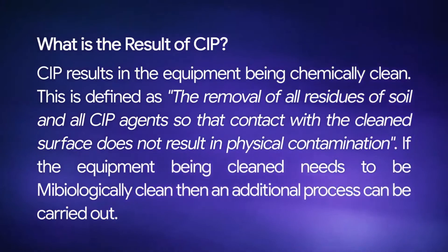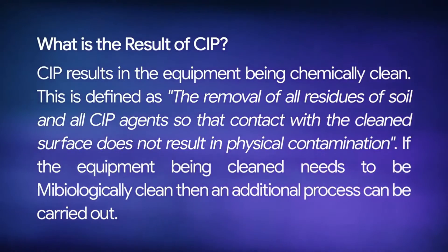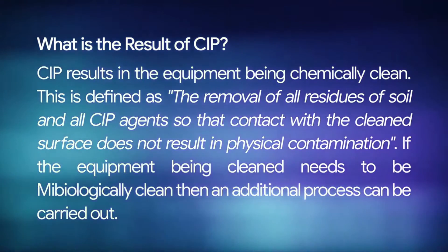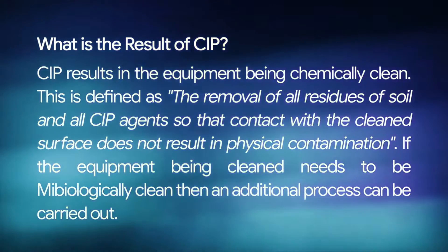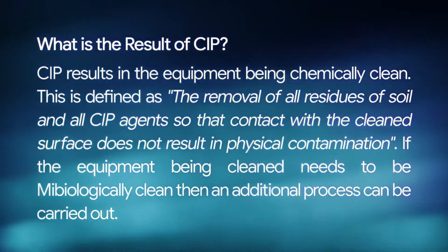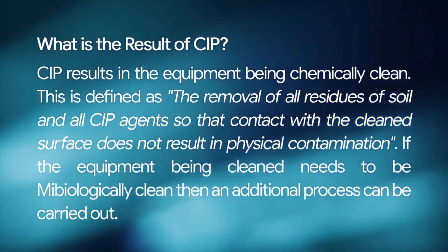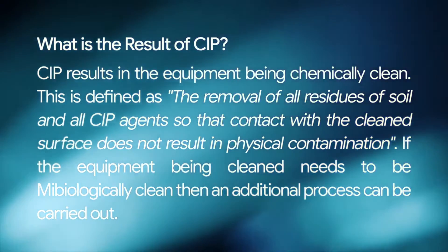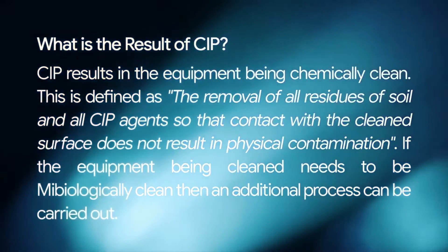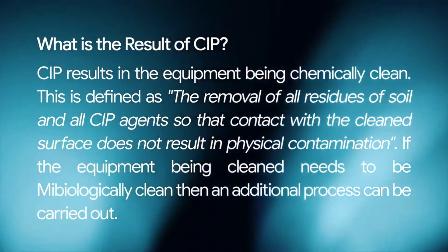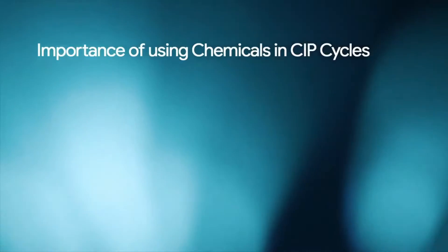Chemically clean is defined as the removal of all residues of soil and all CIP agents, so that contact with the clean surface does not result in physical contamination. If the equipment being cleaned needs to be microbiologically clean, then an additional process can be carried out.